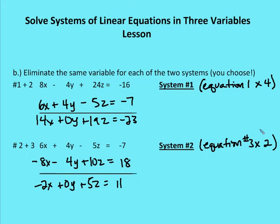A common mistake is to go too quickly through these steps. If you make a small error in multiplication or addition, you'll wind up with an incorrect answer. I'm pausing to double-check. I've confirmed that I added and subtracted correctly. I started with three equations and three variables and have now reduced that to two equations with two variables. We know what to do when we have two equations with two variables — we can use substitution or elimination.